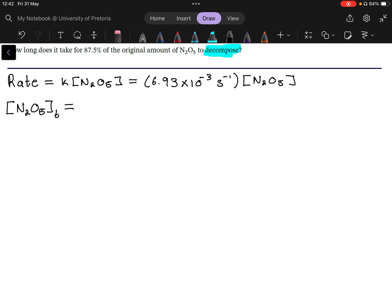So if it decreased by 87.5%, it means 12.5% needs to be left. Or put differently, it means N₂O₅ initially, and we have lost 0.875, which is the fraction we have lost of N₂O₅, which then leaves us with 0.125, which is also known as 12.5% N₂O₅. So that's the next important part.